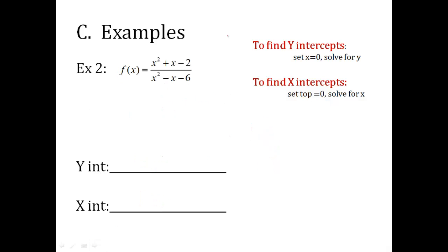Another example, finding y-intercepts first. Set every x equal to 0. So I have 0 squared plus 0 minus 2 over 0 squared minus 0 minus 6. So what I really have here is negative 2 over negative 6, which reduces to positive 1 third. Remember, this is a y. This is my y. So my y-intercept is 0, 1 third.